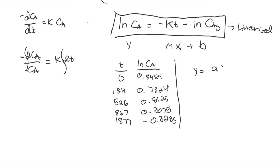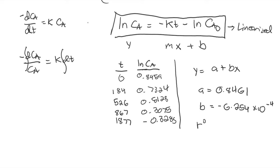The regression gives Y equals A plus BX, with A equal to 0.8461, B equal to negative 6.254 times 10 to the negative 4, and R-squared equal to 0.9999. This is very close to 1. The closer R-squared is to 1, the better our experimental data fits the model. Getting 0.9999 is usually a good sign that this is already the answer.